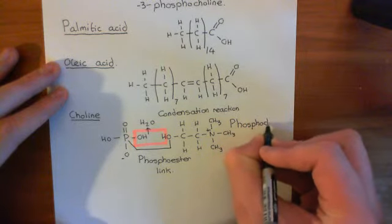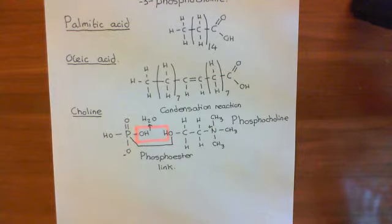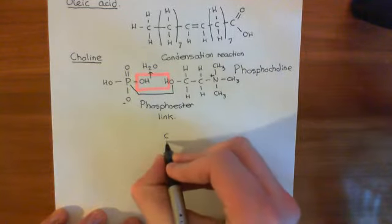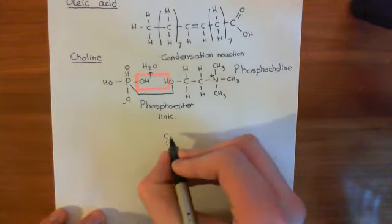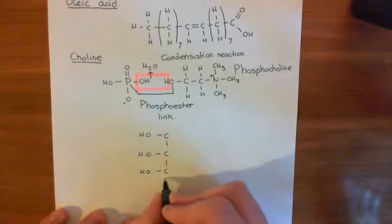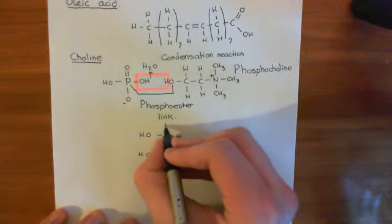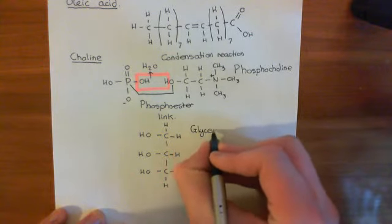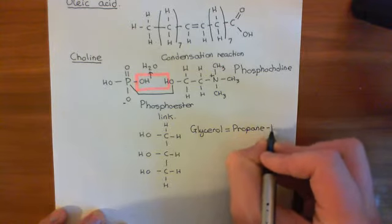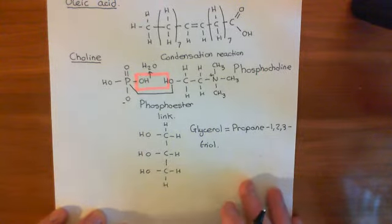Now we're going to put all of these molecules onto a glycerol molecule to create our POPC molecule — our 1-palmitoyl, 2-oleoyl, SN-glycero-3-phosphocholine. Glycerol is a three-carbon molecule with free alcohol groups off each of the carbons. Its full name is propane-1,2,3-triol, to account for the three alcohol groups.